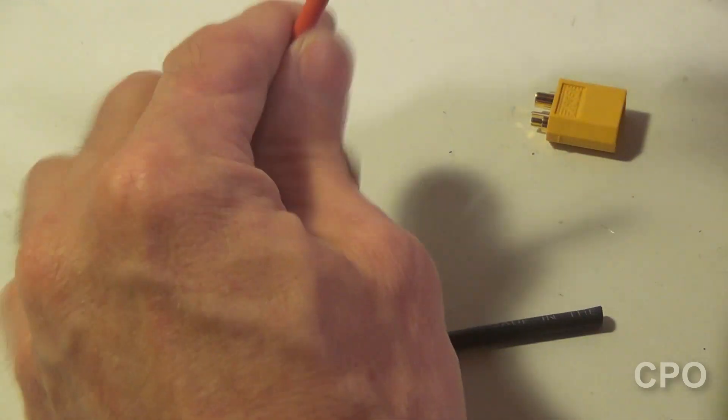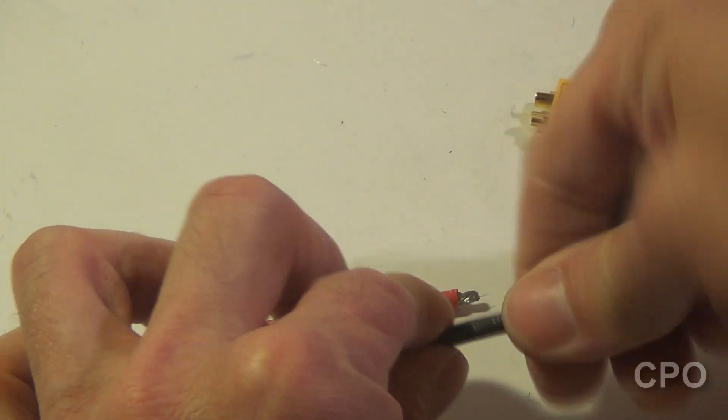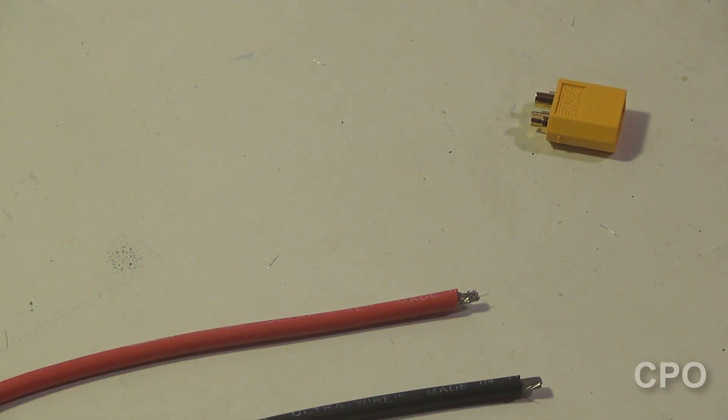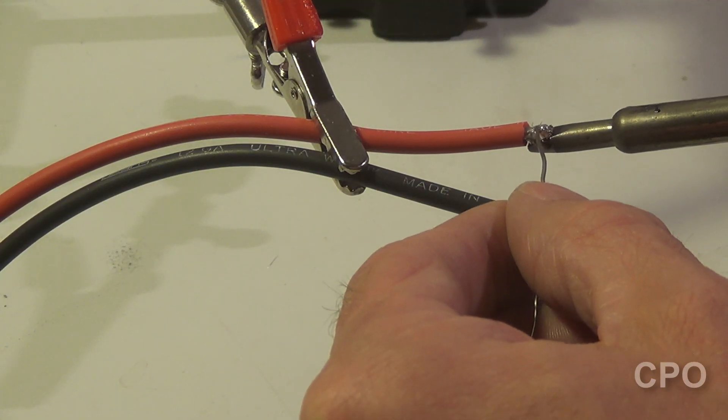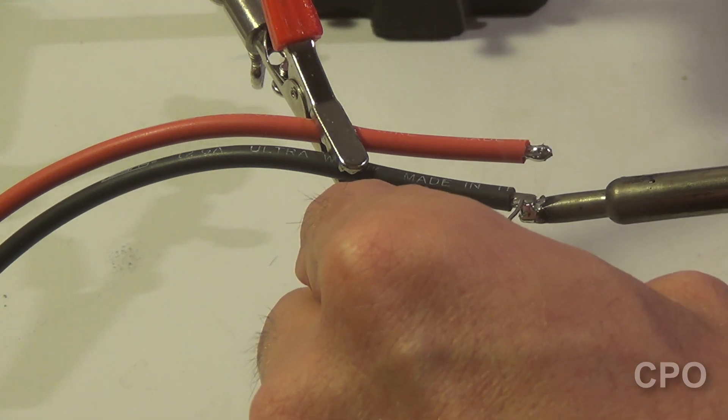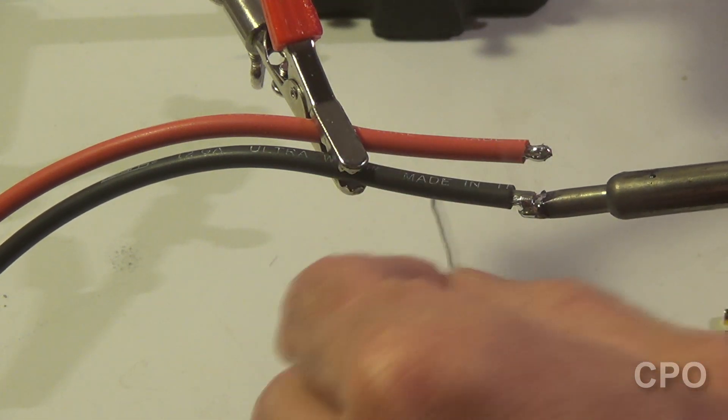And just going to get these things set up, prepared on both ends, just soldered on or tinned on one end to connect to the PCB. And then, of course, the other end is going to get the XT60.